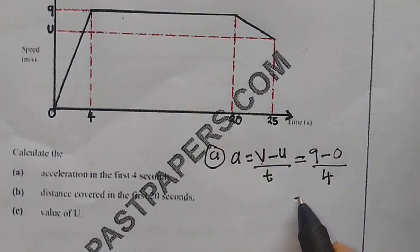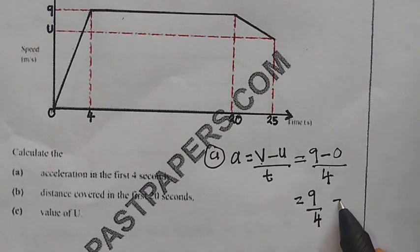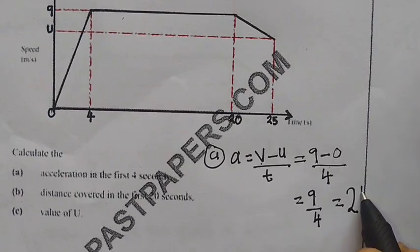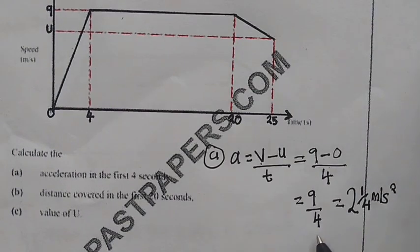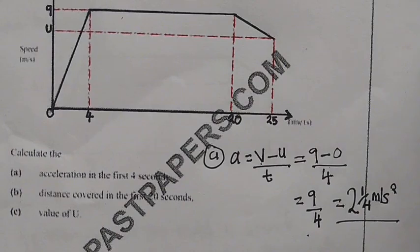From here: 9 minus 0 gives us 9 over 4. Then 4 into 9 goes 2 times, remainder 1 over 4. So the acceleration is 2 and 1/4 meters per second squared. So we have answered question A.